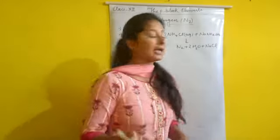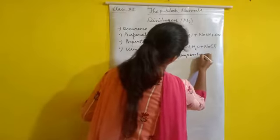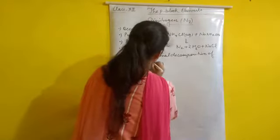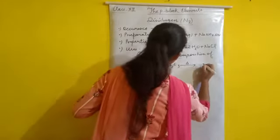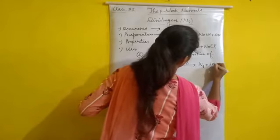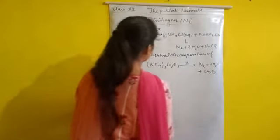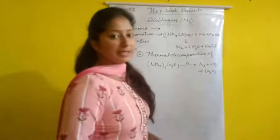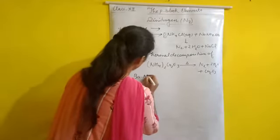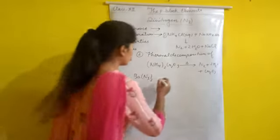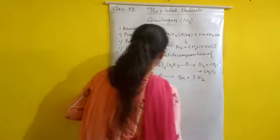The second method of preparation is the thermal decomposition of ammonium dichromate, (NH4)2Cr2O7, which decomposes into N2, H2O, and Cr2O3 (chromium oxide). Pure dinitrogen can also be obtained by the thermal decomposition of sodium or barium azide, Ba(N3)2.